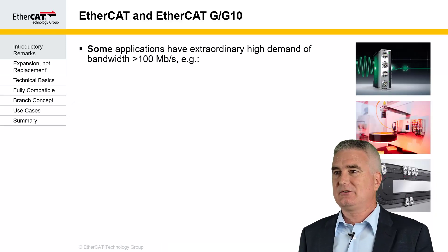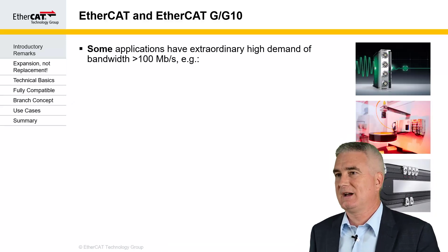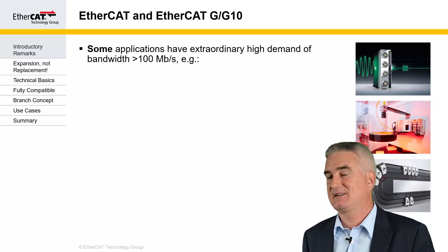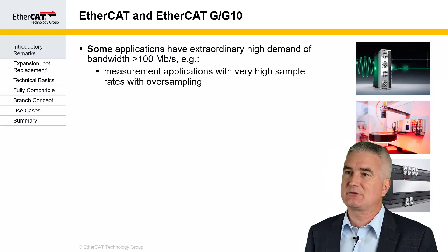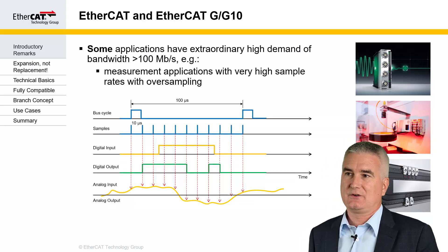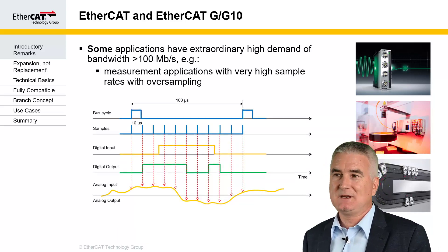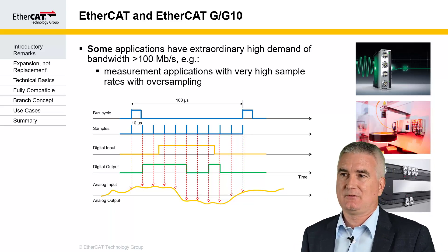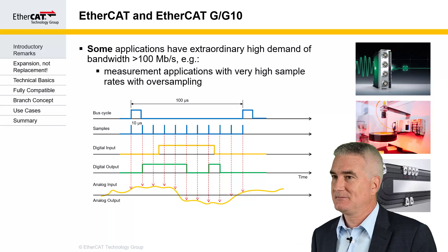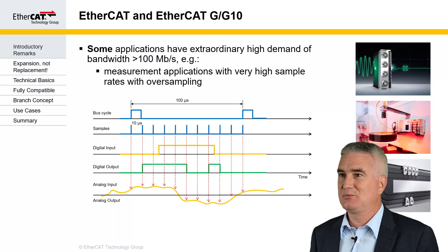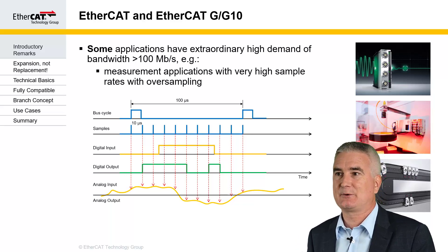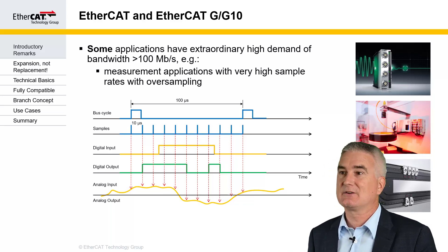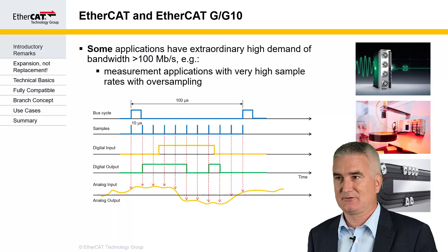However, some applications have an extraordinarily high demand of bandwidth that exceeds the 100 megabit that EtherCAT can provide today. One example is measurement applications with oversampling. That means, for instance, an analog input is sampling multiple times for every communication cycle. And we have analog inputs today that sample at 300 kHz with 24-bit resolution and multiple channels. You can imagine that this requires a lot of bandwidth.